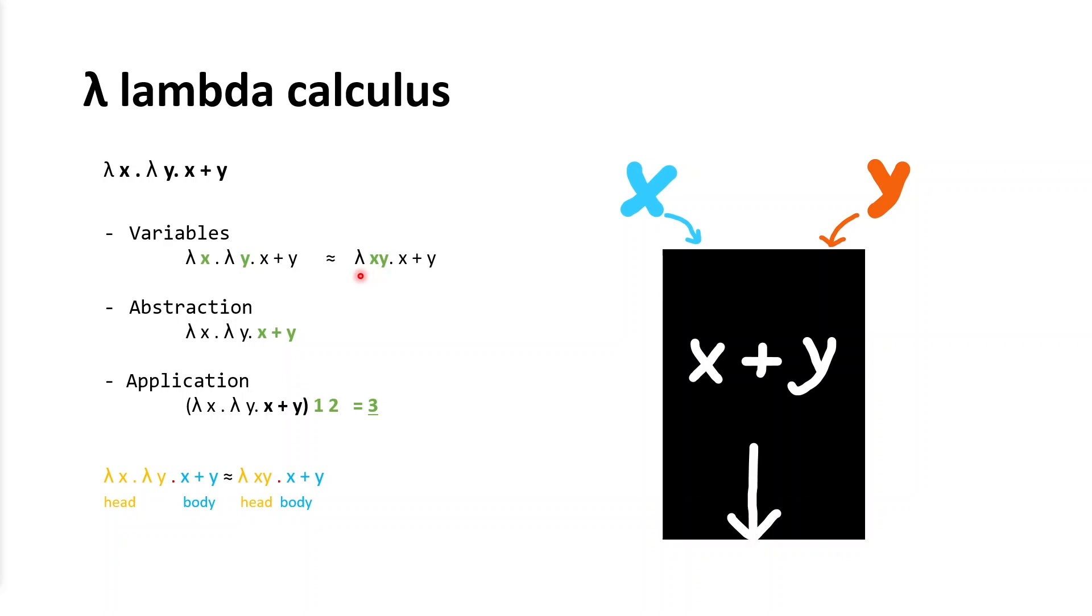After variables, there is abstraction, which defines what action or computation will be done with variables. And finally, there is application, which means the execution of the program.